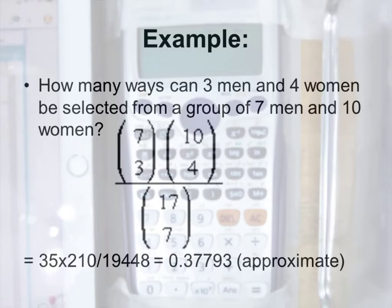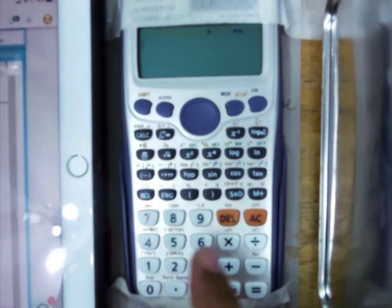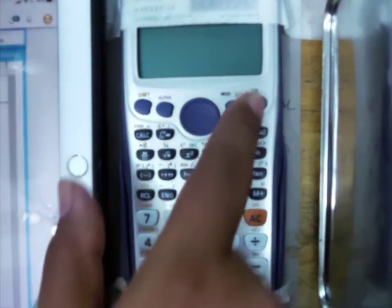So what is the probability? How many ways can this selection be made? We are going to calculate the probability.